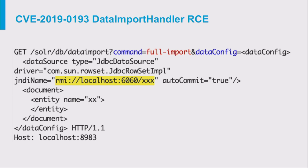There is one more vulnerability using the same DataImportHandler, connected to a deserialization issue in how the XML is processed. In the driver parameter, we can specify a class name, and on the Solr server an object with that class name will be instantiated. We can use the well-known pure JDK gadget chain — a JdbcDataSource implementation that requires just two setters — leading to a JNDI injection attack and subsequently to remote class loading.